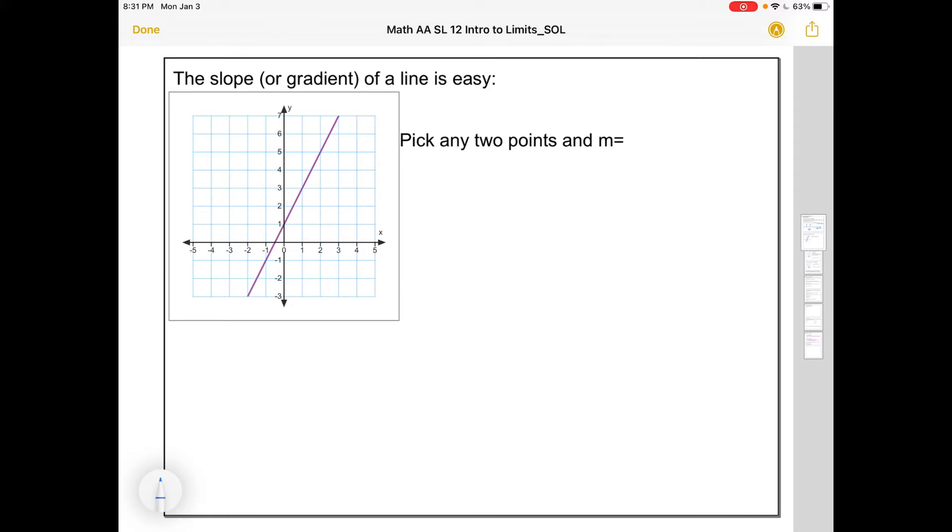Finding the steepness of a line is easy. All you have to do is pick any two points and slope, which is denoted by m, or you might call it gradient. It's just rise over run, or change in y over change in x. Or sometimes we can write it as y2 minus y1 all over x2 minus x1. So if I pick two points on this line, between those two points there's a run of one and a rise of two. So slope could be two over one, that's just two.